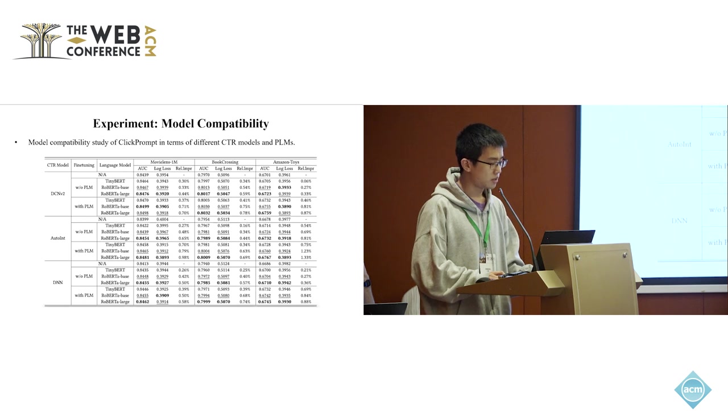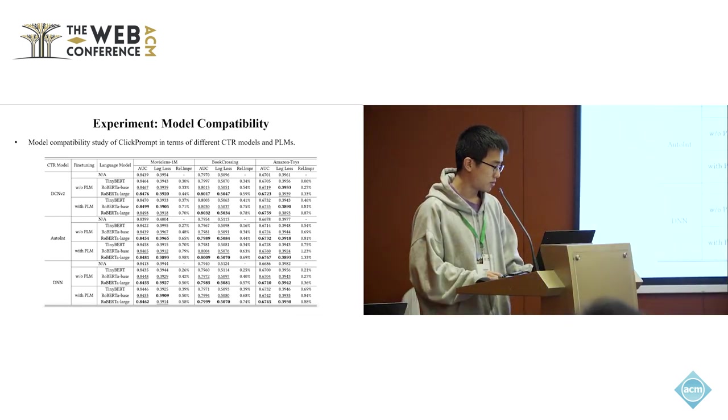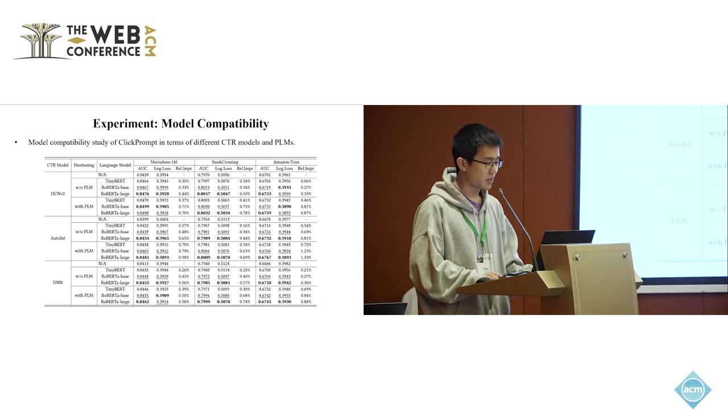Then we also study the model compatibility of our Click Prompts. We choose three different backbones of PLMs and also three different backbones of CTR models: DCN-V2, AutoInt, and DNN. For language models, they are Tiny BERT, RoBERTa base, and RoBERTa large. For all combinations of different backbones, our Click Prompts can make improvements.